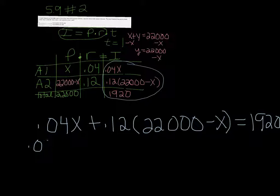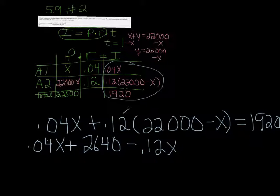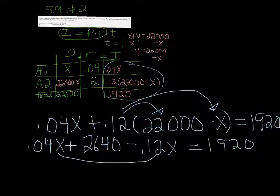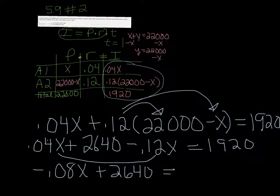Now we solve for X. We can distribute that .12. And we get 2640. And then minus .12X. So it goes to both, equals 1920. Combine the X's, the .12 and the .04. So it's .04 minus .12 is negative .08X, plus 2640, equals 1920.